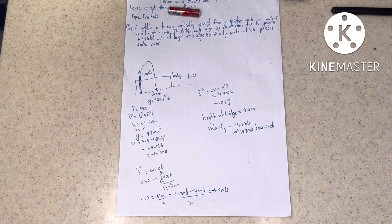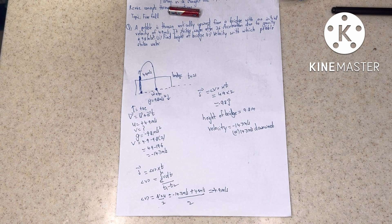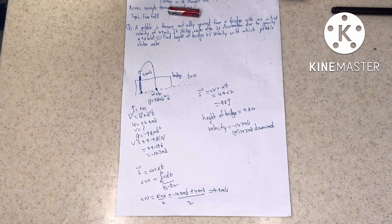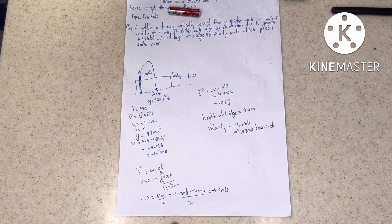The velocity with which the pebble strikes the water is −14.7 meters per second, or 14.7 meters per second downwards. We mention the direction because velocity is a vector quantity. In uniform motion, speed cannot change — unlike uniformly accelerated motion.